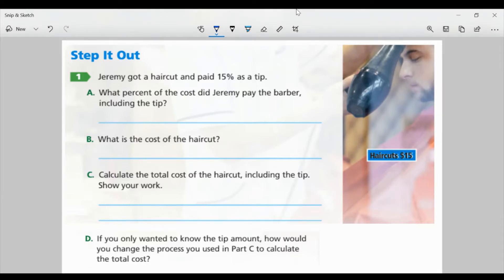Part 1. Jeremy got a haircut and paid 15% as a tip. Part A: What percent of the cost did Jeremy pay the barber, including the tip? Well, I know he paid 15% for the tip. Part B: But what percent represents the amount Jeremy paid the barber before the tip? The original amount would be 100% of the cost. So when we combine those, Jeremy's paying 115% to the barber.